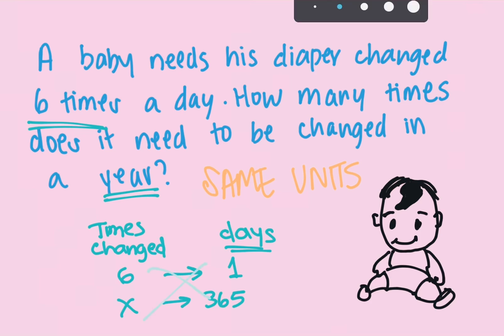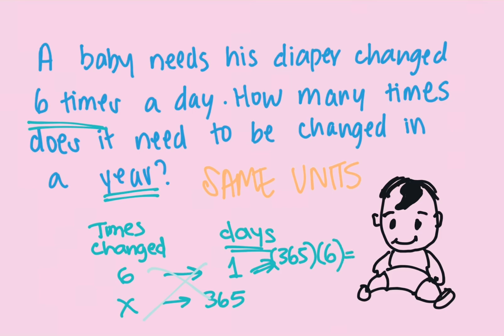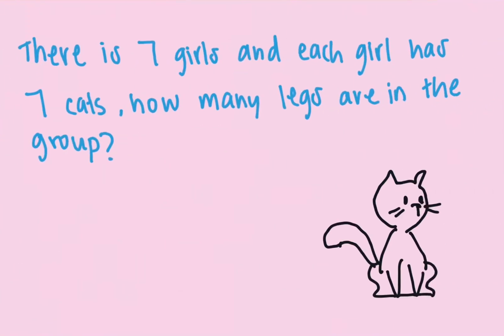In a year there are 365 days, so that makes more sense. Cross multiply and set up the equation: 365 multiplied by 6, and 1 multiplied by x equals x. So 365 multiplied by 6 equals 2,190. He needs to be changed 2,190 times in a year — that's a lot of diapers!